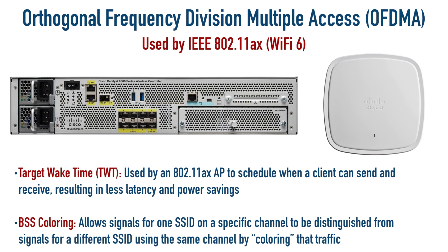Something else we have is BSS coloring. BSS — Basic Service Set — refers to the MAC address of an access point. If we're in a higher density environment with multiple access points, maybe with overlapping or different SSIDs communicating on the same channel, it can be hard for a client to know which access point it's communicating with. BSS coloring lets it keep track — it's almost like tagging a frame on a VLAN. We're essentially coloring or tagging these wireless transmissions to say: you're associated with this SSID on this access point, with this MAC address.